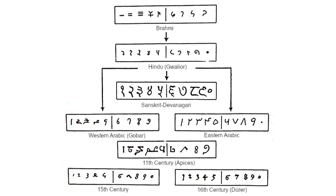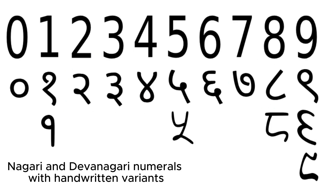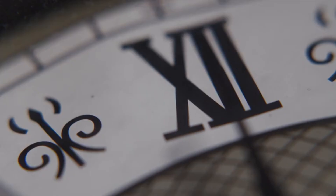They created distinct symbols for 1 to 9 and introduced the revolutionary concept of zero as a placeholder by the 6th century. Their decimal positional notation offered unprecedented efficiency compared to additive systems like Roman numerals.